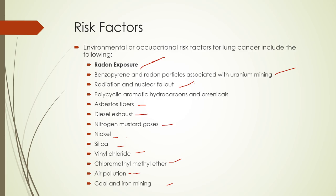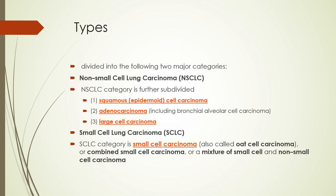There are two general types of lung cancer: small cell and non-small cell. Non-small cell lung cancer (NSCLC) includes squamous cell carcinoma, adenocarcinoma, and large cell carcinoma. Small cell lung cancer (SCLC) is also known as oat cell carcinoma, or combined small cell carcinoma, and can exist as a mixture of small cell and non-small cell. Small cell and non-small cell are the two general categories.